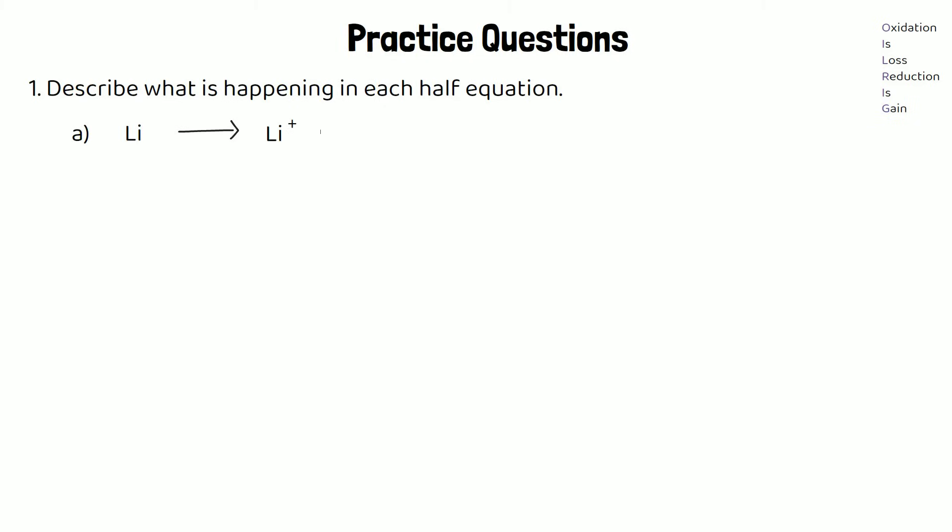So for part A we've got Li makes Li+ plus e-. And for part B, Ca2+ plus 2e- makes Ca.